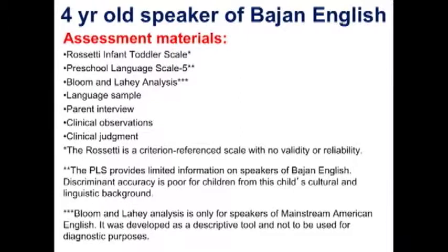Here's that four-year-old speaker of Bajan English — this is an example of how I might write up how I'm looking at this child. The Rossetti obviously stops at three years old, but I used it with this child because he was functioning at around the two-and-a-half to three-year level, so I could use that as a description. I don't like Bloom and Leahy — I include it for the various universities that continue to teach it. Remember, Bloom and Leahy is only for mainstream American speakers of English; it was developed as a descriptive tool, not a diagnostic tool. Also, if you write down what a child says and conclude they don't have certain content categories or forms, but you haven't gotten enough of a sample or stressed the child's linguistic system so those categories and forms would come up — how can you possibly say they're missing?